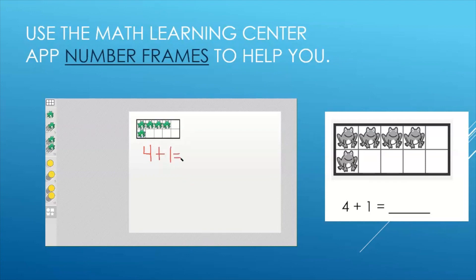Our equation on our paper says 4 plus 1 equals something. We need to count to find out how many. We have a couple ways we can do this. We can count 4 and 1 more. 4, 5. So I know 4 and 1 more is the same as 5. I can also move my frog from my second row, my bottom row, into my top row to fill the 5 frame across. So I have a full row of frogs. That's the same as 5.